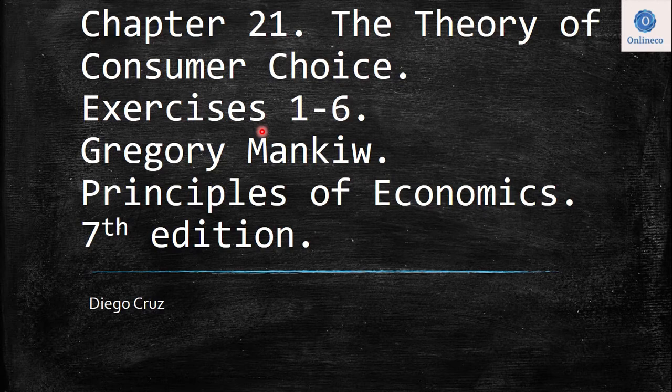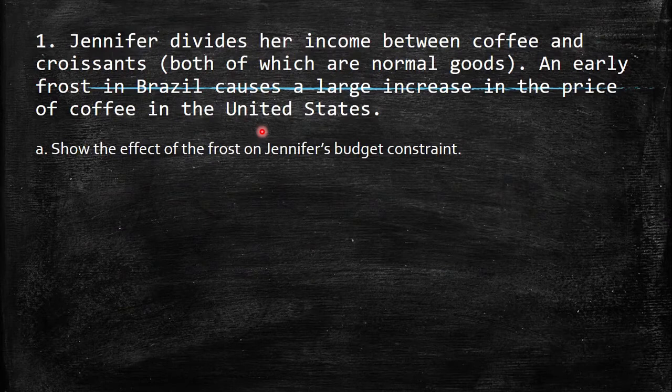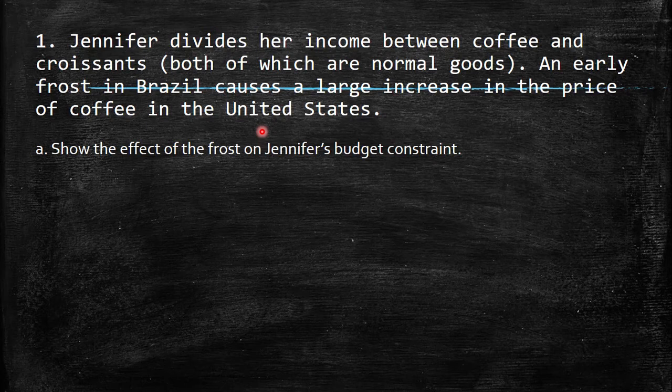The first question says Jennifer divides her income between coffee and croissant, both of which are normal goods. Remember, normal goods are those goods where when the price goes up, naturally the demand goes down. On the other side, if the price goes down, demand will increase. When income increases, the demand for normal goods will increase as well.